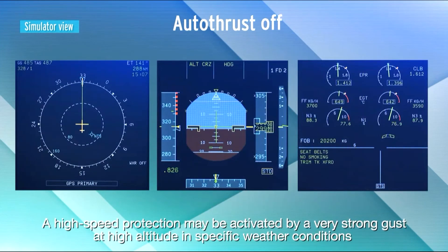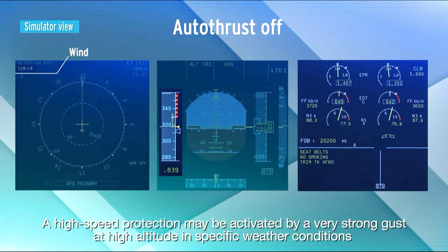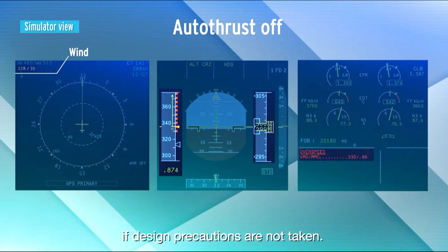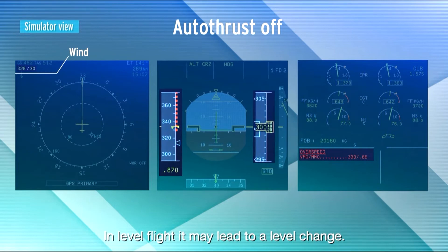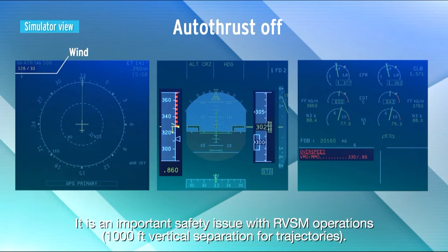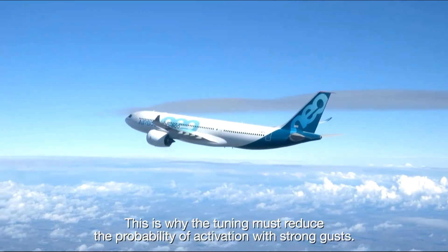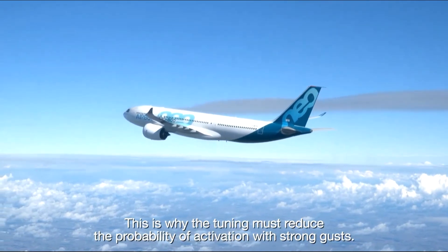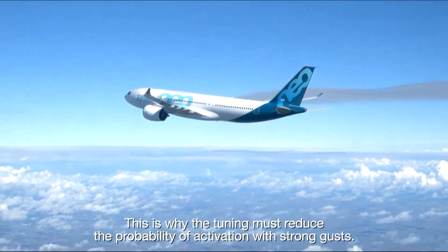A high-speed protection may be activated by a very strong gust at high altitude in specific weather conditions, if design precautions are not taken. In level flight, it may lead to a level change. This is an important safety issue with RVSM operations — 1,000 feet vertical separation for trajectories. This is why the tuning must reduce the probability of activation with strong gusts.